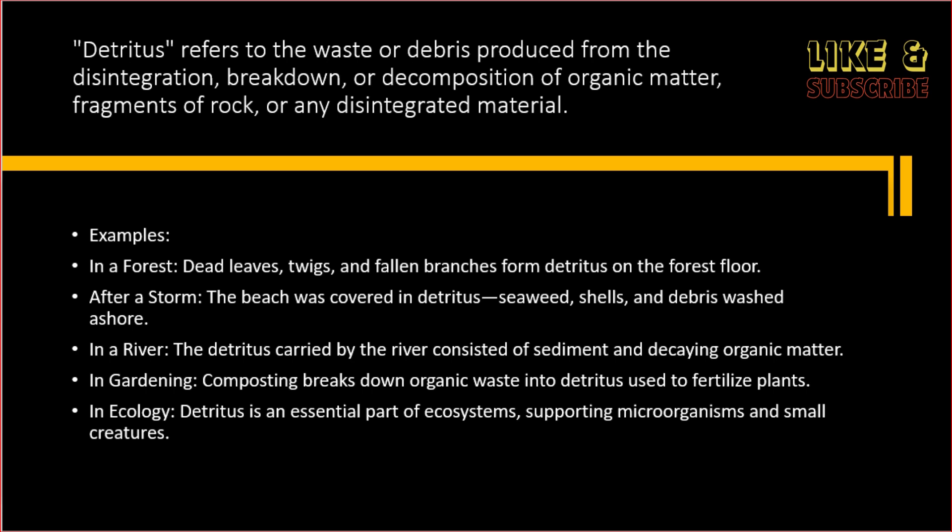Let's look at a few examples to understand the meaning better. In a forest, dead leaves, twigs, and fallen branches form detritus on the forest floor. After a storm, the beach was covered in detritus — seaweed, shells, and debris washed ashore. In a river, the detritus carried by the river consists of sediment and decaying organic matter.